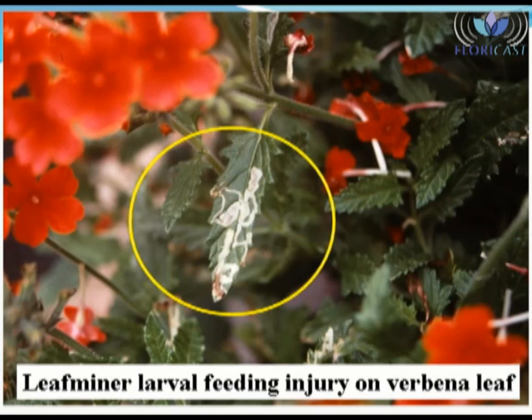Leaf miner larval feeding causes very distinct symptoms on plants, such as serpentine or blotched mined areas on leaves, as shown in this image.